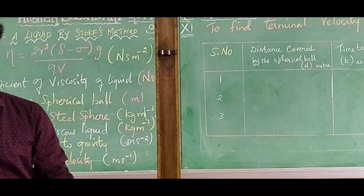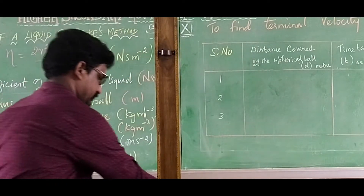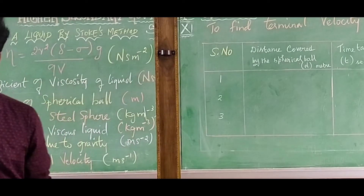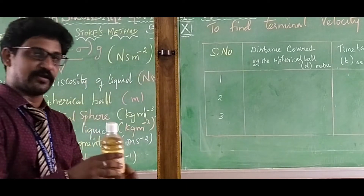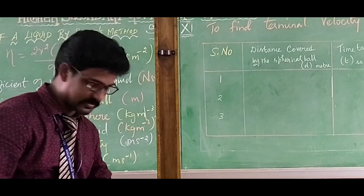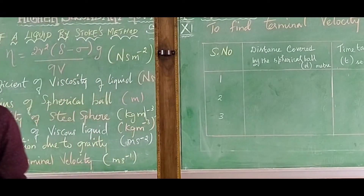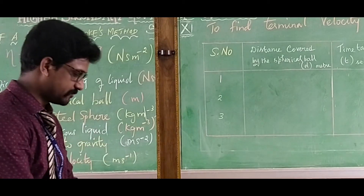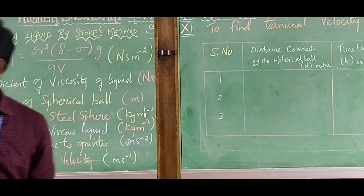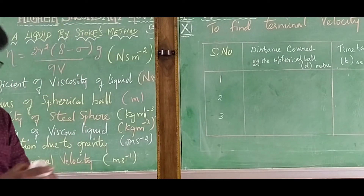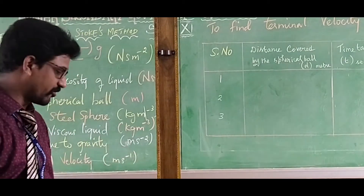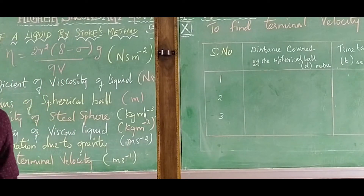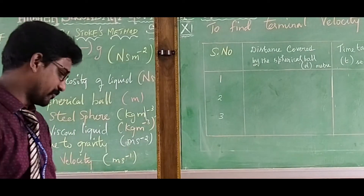The apparatus required includes: one meter long glass jar, castor oil as the experimental liquid, a thread, a metallic spherical ball of diameter 3 mm, and a digital stopwatch.